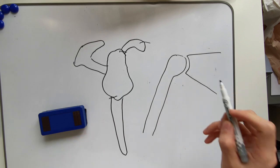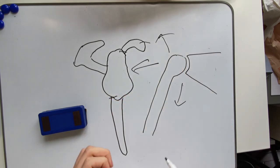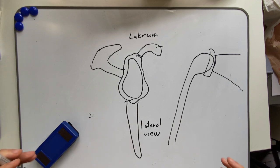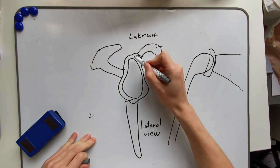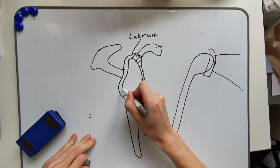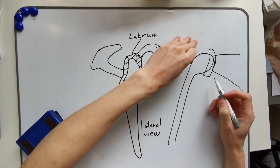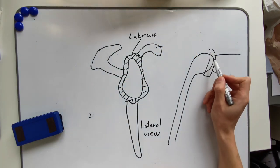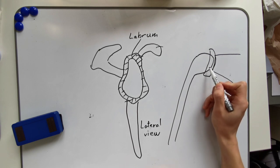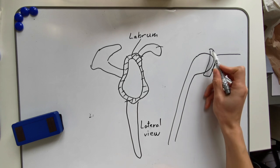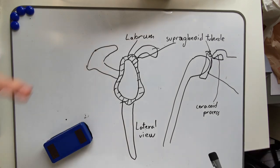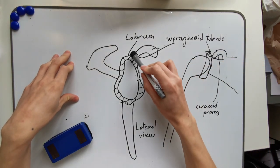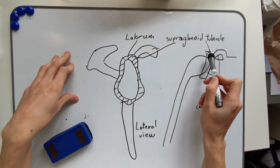Even though it's called a ball and socket joint, the head is not fixed onto the glenoid very well and can slip out in any direction easily. This is where a structure called the labrum comes in to help stabilize the head of the humerus. Around the glenoid there is a piece of fibrocartilaginous tissue — similar to a ligament — that surrounds the perimeter of this glenoid surface, forming a deep ring. By wrapping around more of the surface of the proximal head of the humerus, it prevents it from slipping out as easily. You can also see the supraglenoid tubercle just above the top end of the glenoid on both the lateral and anterior views.